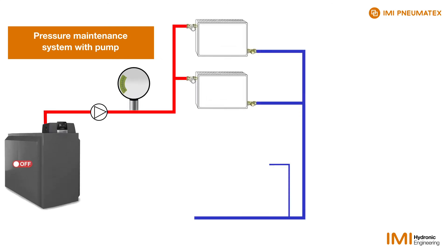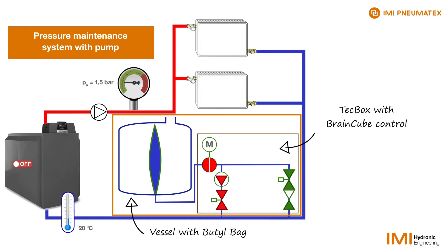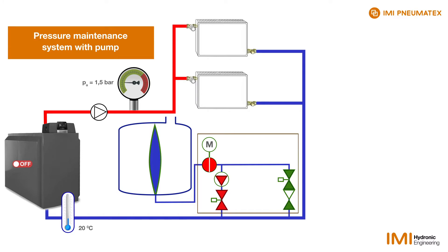We are looking at a heating plant that is protected by a pressurisation system equipped with pumps. The manometer indicates an initial pressure of 1.5 bar in the system's cold state.